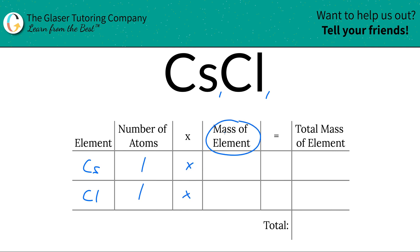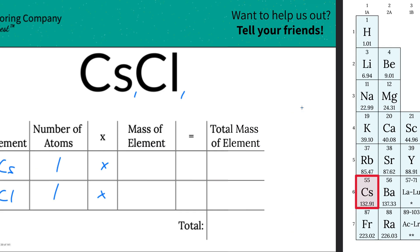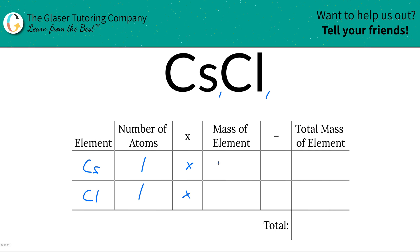Then we're going to take those number of atoms and multiply it by the mass of the element. Where do we find those masses? To the periodic table. The masses are down here at the bottom. Cesium is about 132.91, chlorine is about 35.45, and those are the numbers we're going to write inside the table.